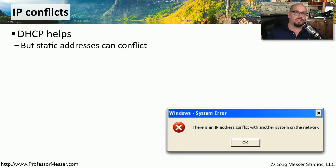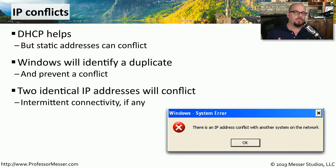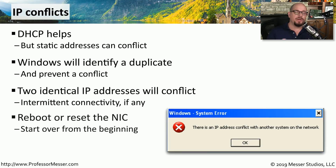There might also be cases where two devices are trying to share the same IP address. This IP address conflict doesn't usually occur with DHCP, but if you have some statically assigned and some DHCP-assigned devices, you may run into this conflict. Windows and most operating systems will identify if someone else on the network is using that IP address and will display a message saying there is an IP address conflict. If two workstations somehow end up with the same IP, devices will work intermittently. Once you identify and resolve the conflict, you can reboot or reset the NIC to restart the DHCP process.